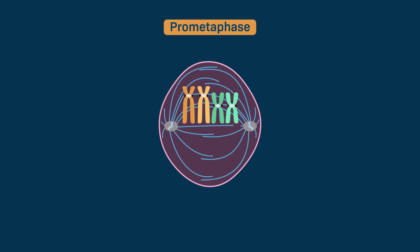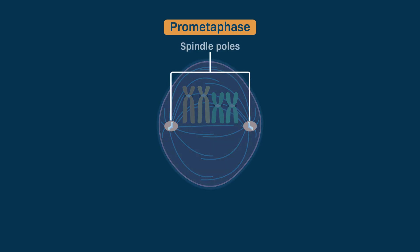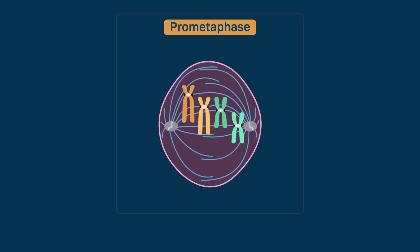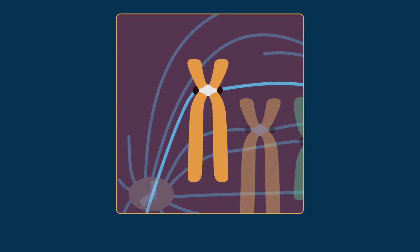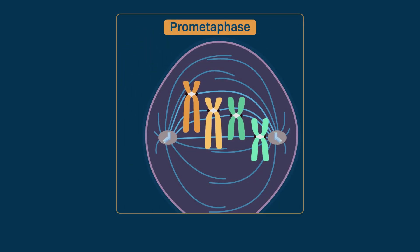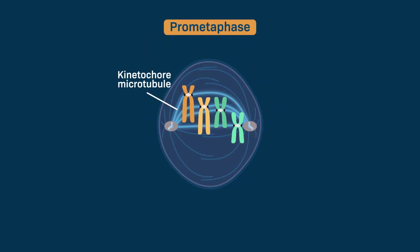Once the centrosomes reach opposite ends of the cell, they are referred to as the spindle poles. From these poles, microtubules extend and attach to the kinetochores, which are specialized protein structures at the centromere of each chromatid. These microtubules, known as kinetochore microtubules, anchor to both sides of each chromosome.